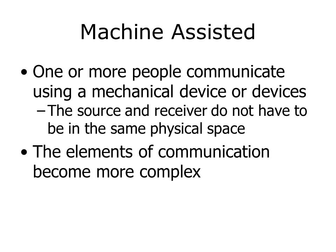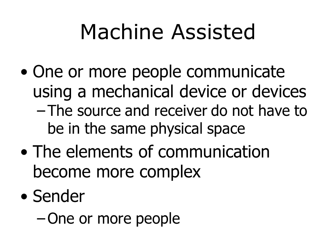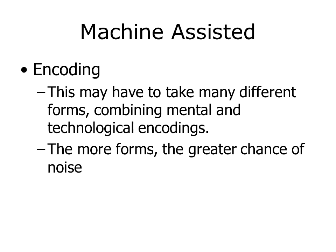The elements of communication become more complex, and the sender can be one or more people. The encoding may have to take many different forms, usually a combination of mental and technological encodings. Mechanical encodings add complexity to the communications process and increase the risk of failed communication.